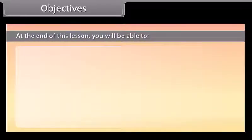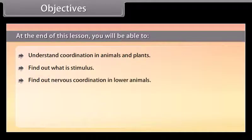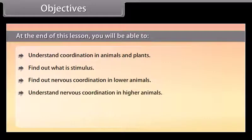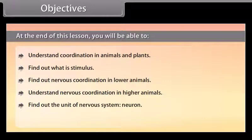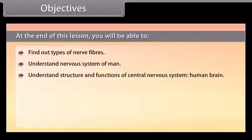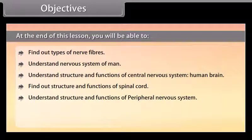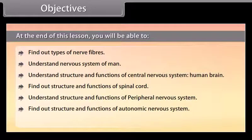Objectives. At the end of this lesson, you will be able to: understand coordination in animals and plants; find out what a stimulus is; find out nervous coordination in lower animals; understand nervous coordination in higher animals; find out the unit of nervous system; find out types of neurons; find out types of nerve fibers; understand the nervous system of man; understand structure and functions of central nervous system, human brain, spinal cord, peripheral nervous system, autonomic nervous system; and understand reflex actions.